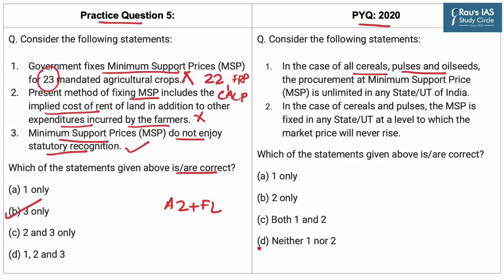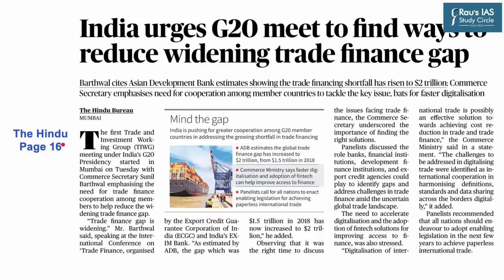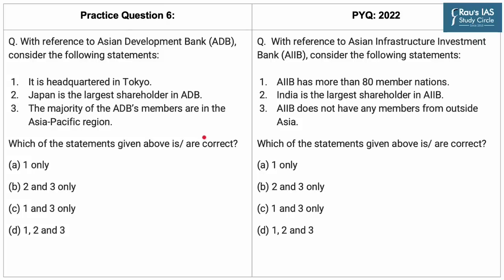As far as the PYQ is concerned, Option D was the right answer. Moving on to the last article of the day, which appeared on page 16 of The Hindu newspaper. The Commerce Secretary cited an Asian Development Bank estimate to show that there is a trade financing shortfall, emphasizing the need for cooperation among G20 member countries to tackle key issues. Intergovernmental bodies and multilateral groupings are an important part of the news cycle, as apparent from the 2022 PYQ on Asian Infrastructure and Investment Bank. Here is practice question number 6.